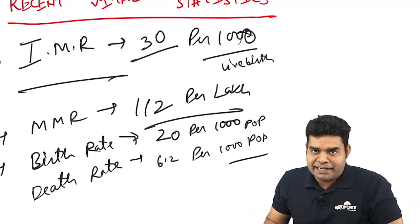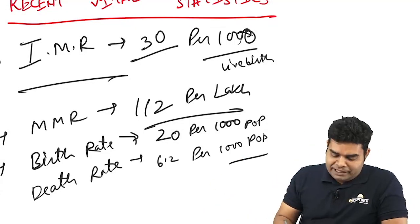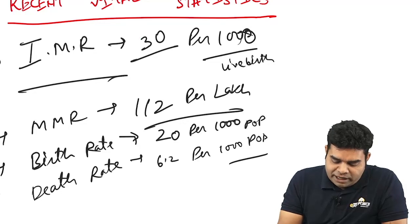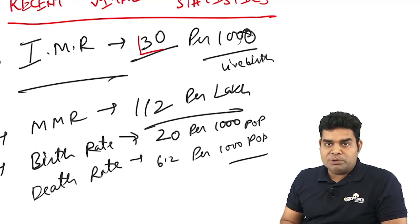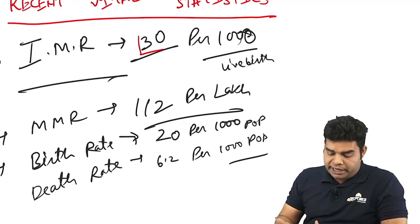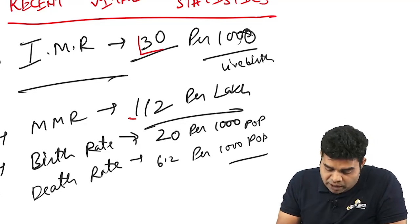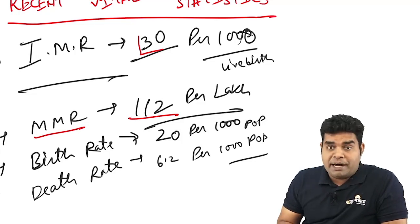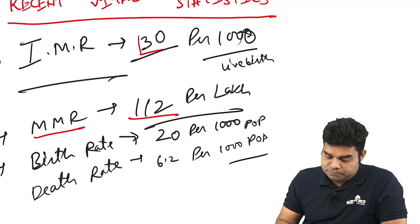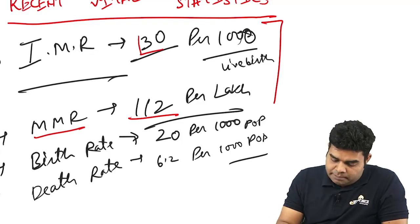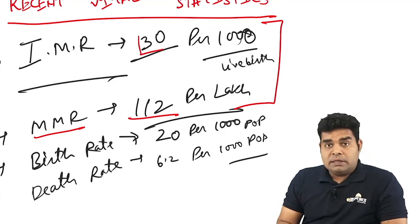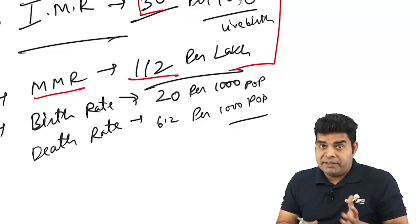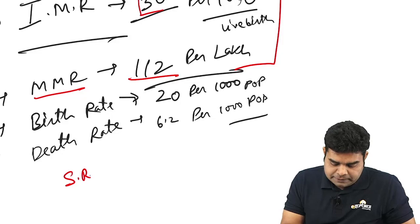The main vital statistics to know: infant mortality rate is now 30 per thousand according to world health data, and MMR is 112 per lakh. The data which India gets every six months is from SRS — the Sample Registration System.